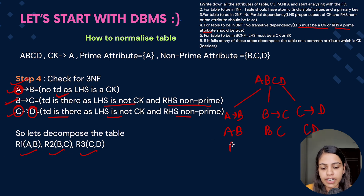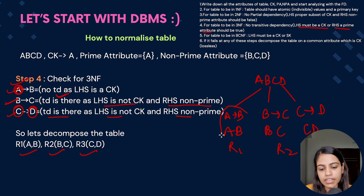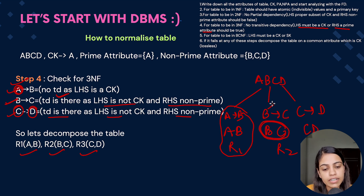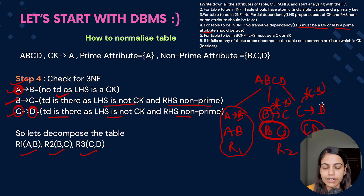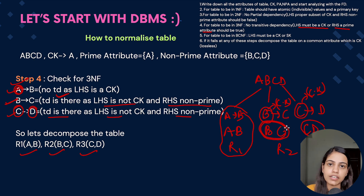Now we re-check third normal form for each decomposed table. R1 (AB): A determines B and A is the candidate key — already in 3NF, no transitive dependency. R2 (BC): B determines C and B is now acting as the candidate key — LHS is a candidate key, so no transitive dependency; R2 is in 3NF. R3 (CD): C determines D and C is acting as the candidate key — LHS is a candidate key, so no transitive dependency. After decomposition, all transitive dependencies are removed.